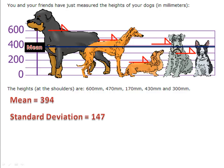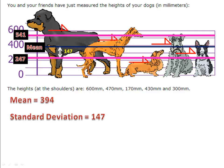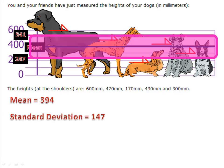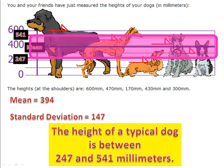The standard deviation is 147. That means we'll look 147 units above the mean and 147 units below the mean. We now have an area from 247 to 541. Between those two heights are the typical height of a dog. We can expect that the average dog will be somewhere between 247 and 541 millimeters.